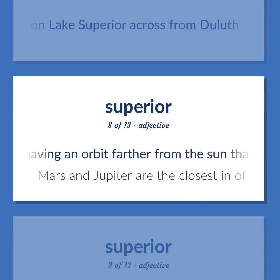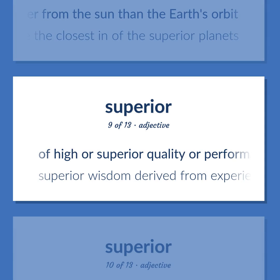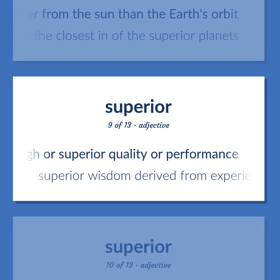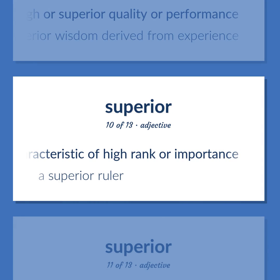Having an orbit farther from the Sun than the Earth's orbit — Mars and Jupiter are the closest in of the superior planets. Of high or superior quality or performance, as in 'superior wisdom derived from experience.' Of or characteristic of high rank or importance, as in 'a superior ruler.'